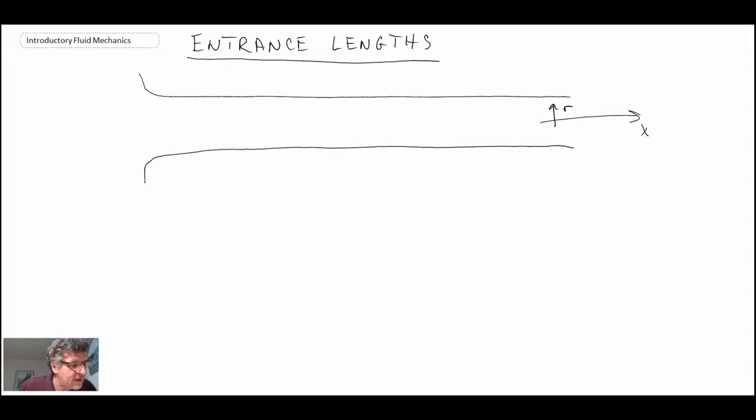Now what happens is as the flow comes in, you have a boundary layer developing and growing along the wall of the pipe. A boundary layer is a region where viscosity is starting to play an important role and consequently you would have a velocity deficit within the boundary layers. So the velocity is lower than it is at other points in the flow.